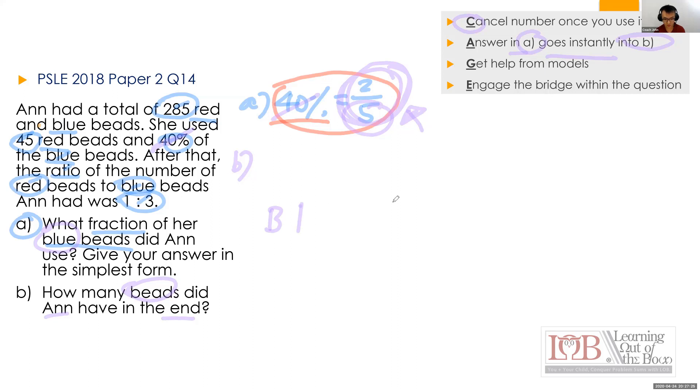So now, 40% is already used, so I cancel away. So I practice the C technique, which is cancel. Then, A, answer in A goes instantly to B. So meaning that you must use this number, this fraction, very important. So, if you have no idea where to start, ask your child to stare at this fraction. What should I do with this? It's talking about blue, right? So, never mind. Let me just draw blue first. Out of five, I will just quickly draw five: one, two, three, four, five, and this is used. This is left. So, teach your child this strategy. Your answer in part A must be quickly transferred down to part B. It should be the first thing you need to do.